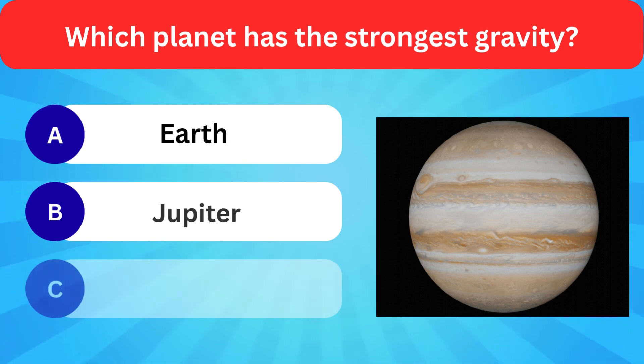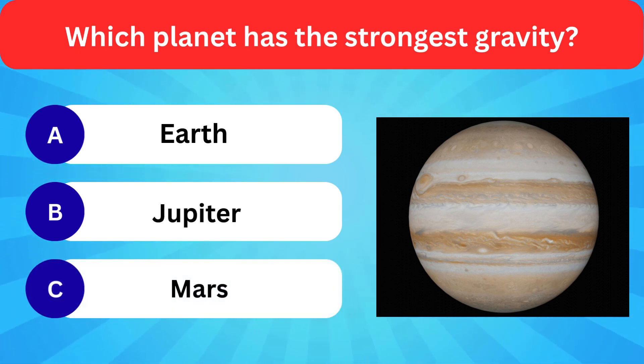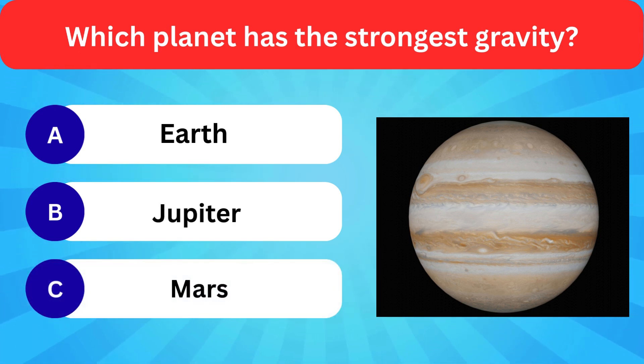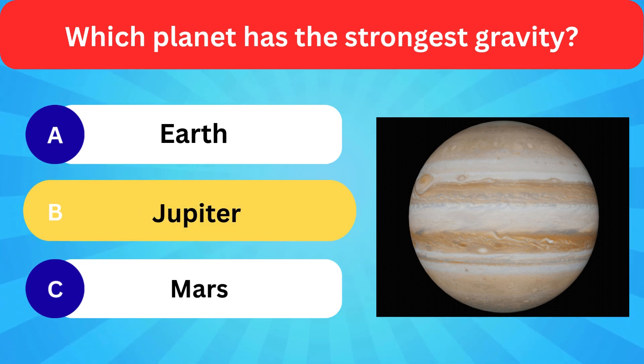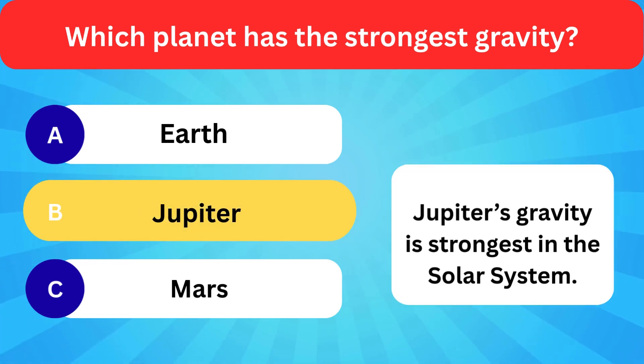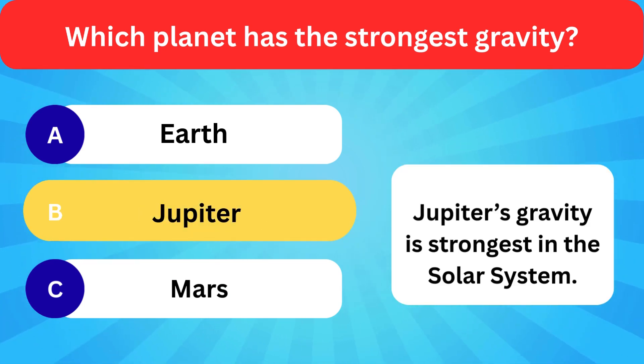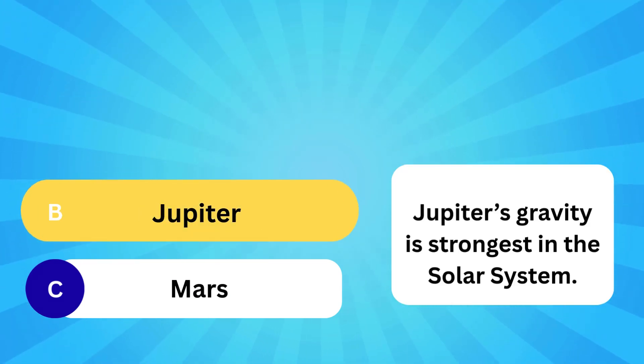Which planet has the strongest gravity? Options: Earth, Jupiter, Mars. Correct answer is Jupiter. Jupiter's gravity is the strongest in the solar system.